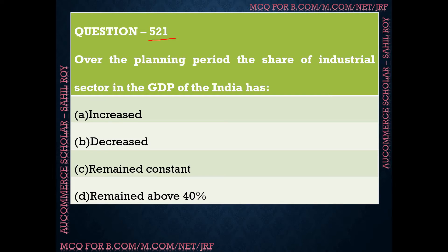Question number 521: Over the planning period, the share of industrial sector in the GDP of India — has it increased, decreased, remained the same, or remained above 40%? Our planning period started after 1951 with the first five-year plan, second five-year plan, and so on. The first option is 'increased,' the second is 'remains constant,' and the fourth is 'remains above 40%.'